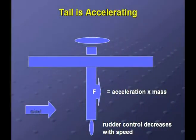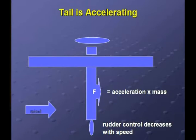According to Newton's force equation, the force turning the airplane equals the mass of the airplane — let's say 2,000 pounds — multiplied by the acceleration. Therefore, the turning force is rapidly increasing. The gorilla will get really big very fast.